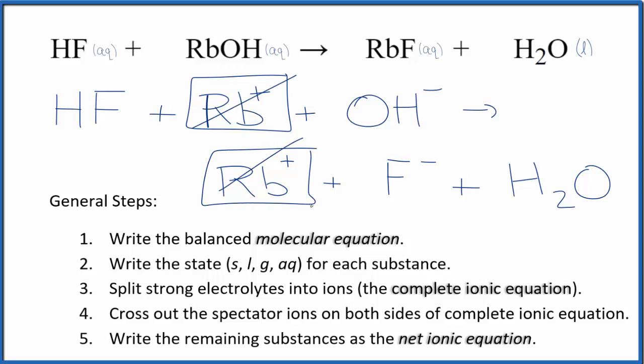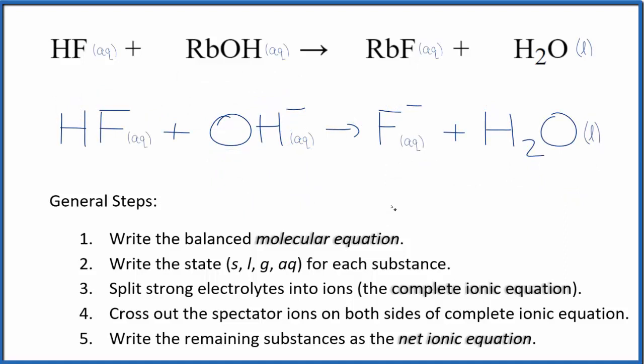I'll write the states, and we'll have our net ionic equation. So this is our balanced net ionic equation for HF plus RbOH. You'll note the atoms, they're the same on both sides, and the charges as well. We have a 1 minus here, and then we have a 1 minus in the products. So that's all balanced.